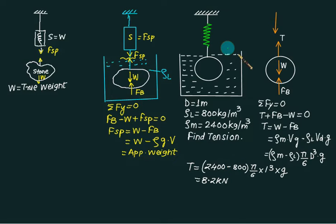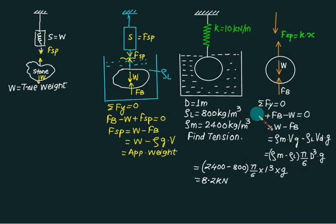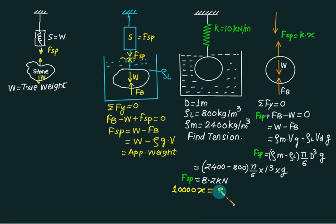Suppose instead of a cable we attach a spring with k = 10 kN/m. Almost all the theory remains the same — we replace tension T with spring force. Spring force = k × x, where x is the displacement of the spring. So 10,000 × x = 8,200, giving x = 0.82 meters.